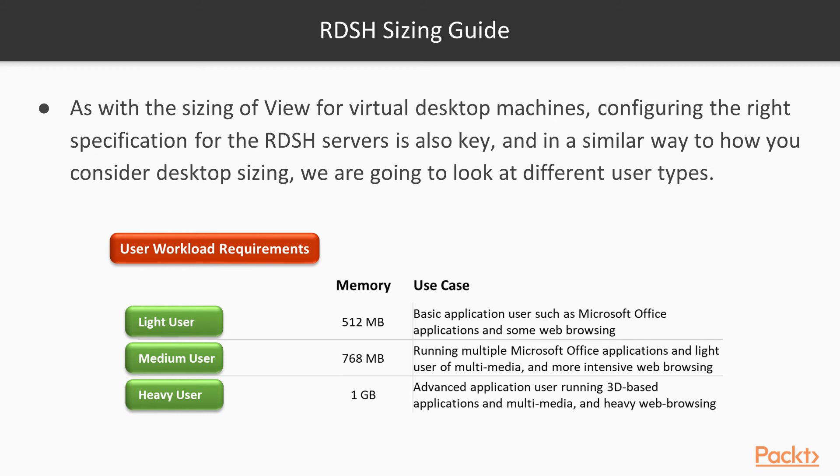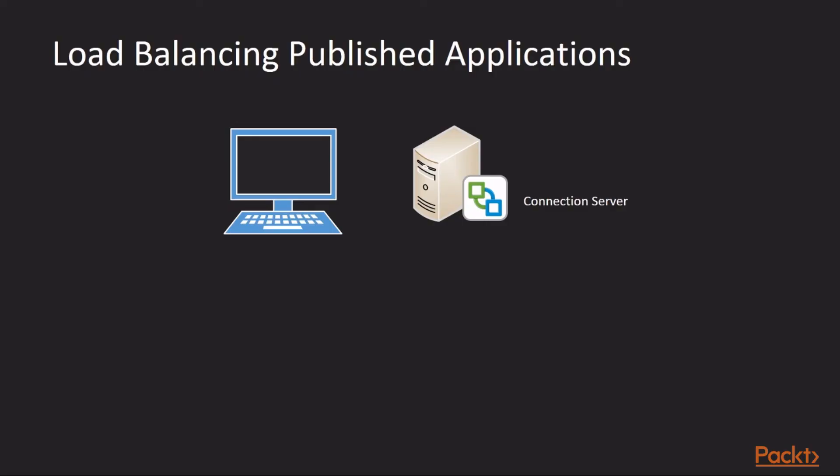Next, we're going to look at load balancing desktop sessions and how that works. By default, which server provides the resources for a session is based purely on how many sessions are available on any given RDSH server at the time of the request. When a user logs in and launches a desktop session, that session is delivered from the server that has the highest number of free sessions available — that is to say, the one that's least busy.